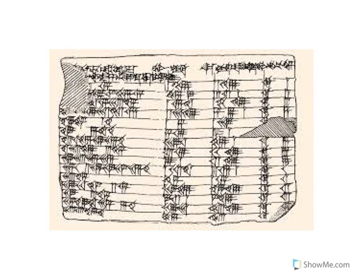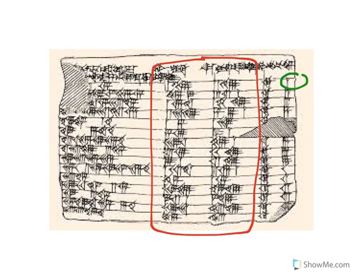Of interest are the numbers in these two columns. These over here are just the column numbers, 1, 2, 3, 4, up to 15. If you look carefully at this one, that number in base 60 is 0, 1, 59, otherwise known as 119.